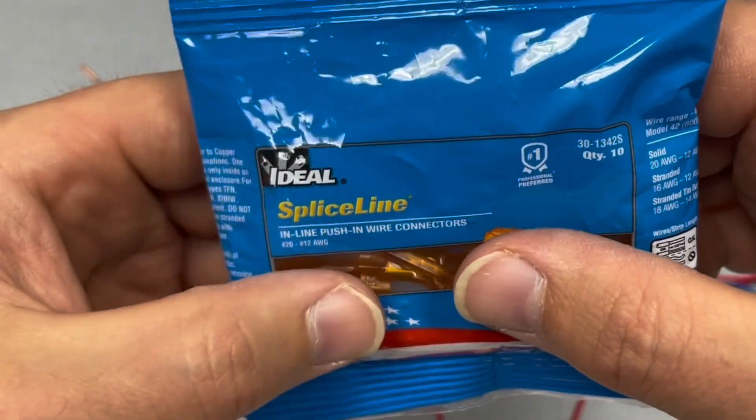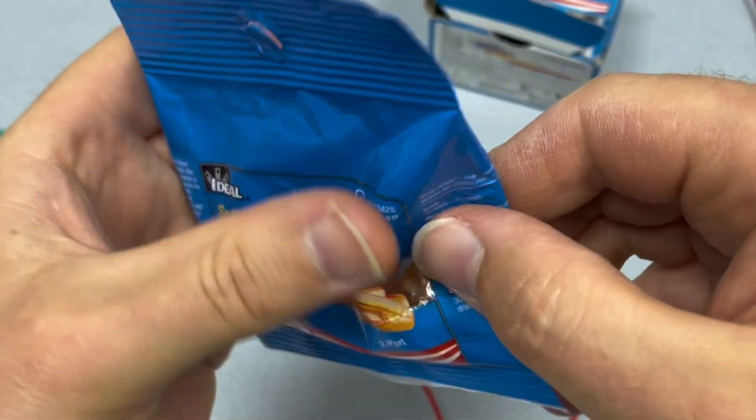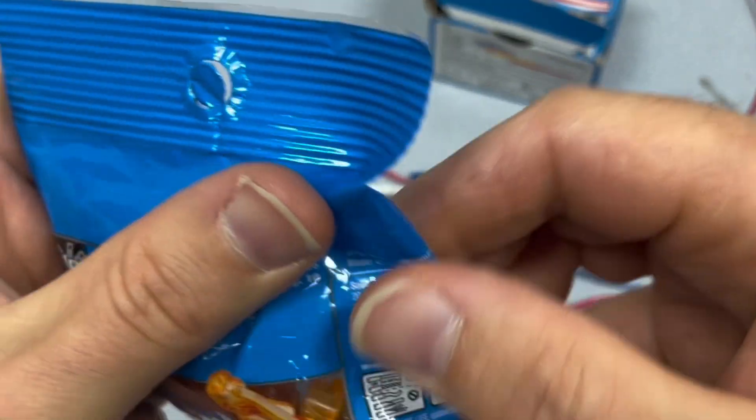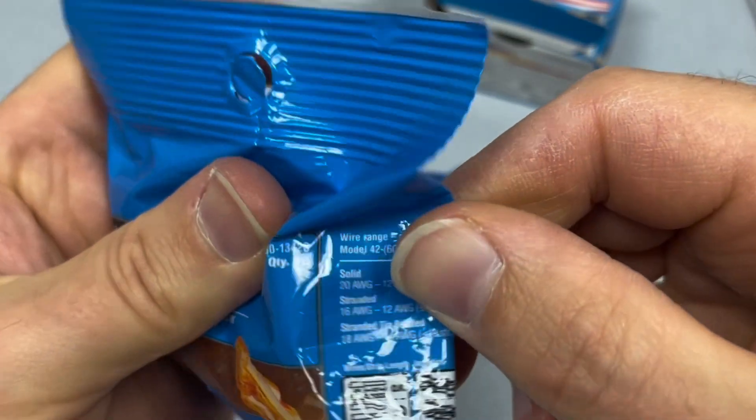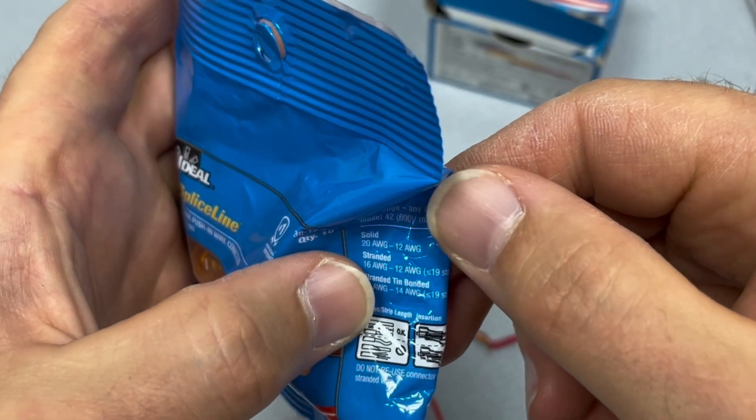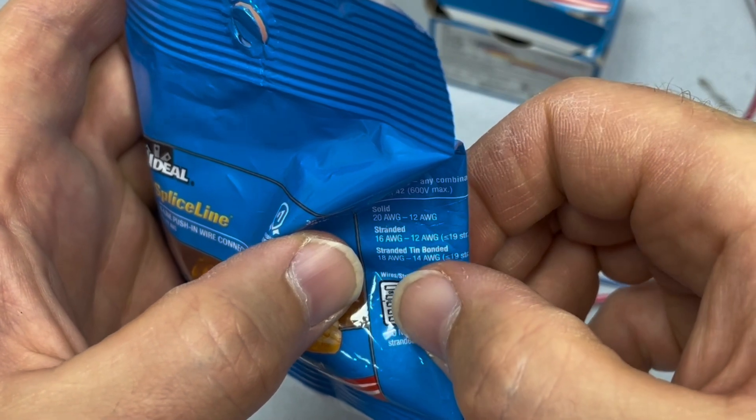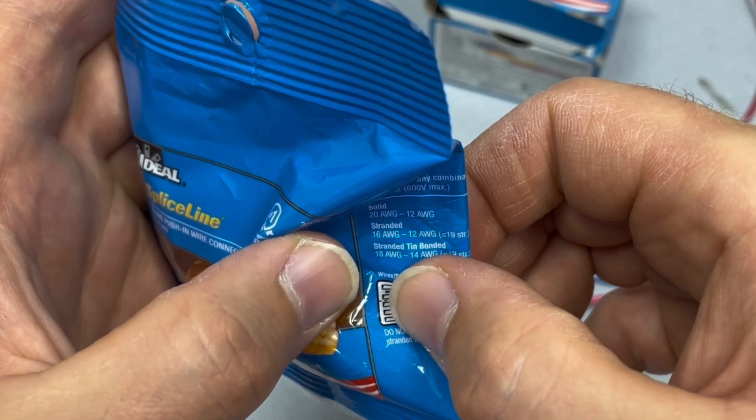Splice line inline push-in wire connector. You can connect solid wire 20 AWG to 12, and stranded 16 AWG to 12.